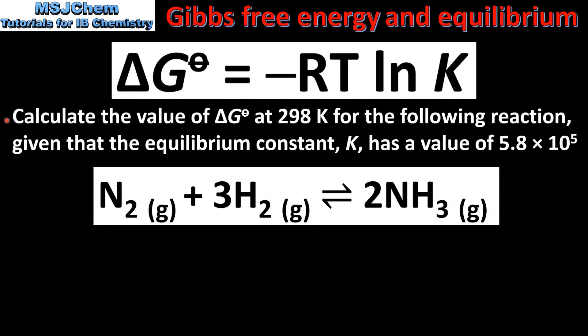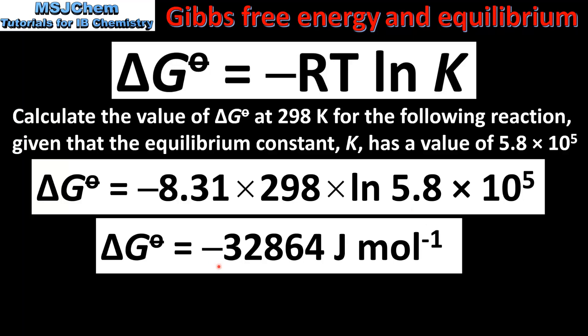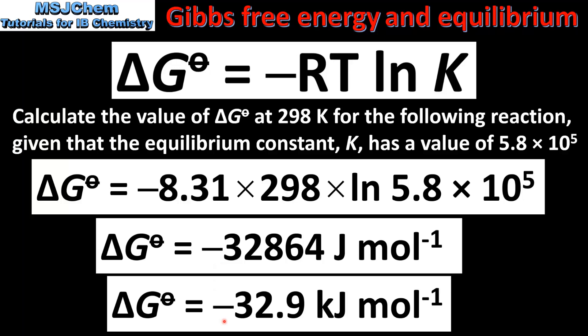Next we look at an example. Calculate the value of the standard Gibbs free energy change at 298 Kelvin for the following reaction, given that the equilibrium constant K has a value of 5.8 × 10⁵. The reaction is the Haber process, in which nitrogen and hydrogen react together to form ammonia. Plugging the values into the equation using R = 8.31, T = 298 K, and ln(5.8 × 10⁵), this gives us the standard Gibbs free energy change in joules per mole. Dividing by 1000 gives a value of −32.9 kJ/mol.